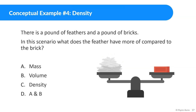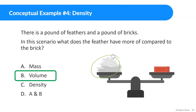Last one: a pound of feathers and a pound of bricks — what does the feather have more of compared to the brick? That's going to be volume, and that should make sense. The feathers are going to be way bigger, much fluffier, while the brick is a lot more compact and that's why it's a lot more dense.